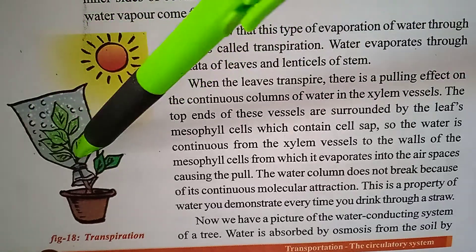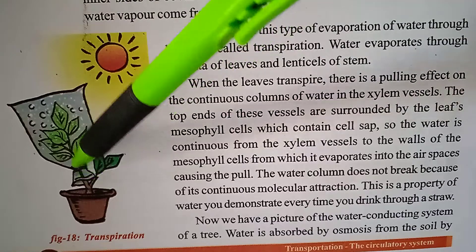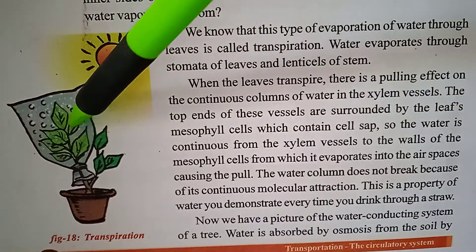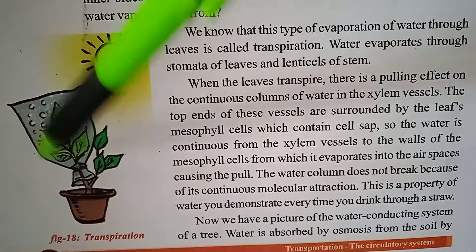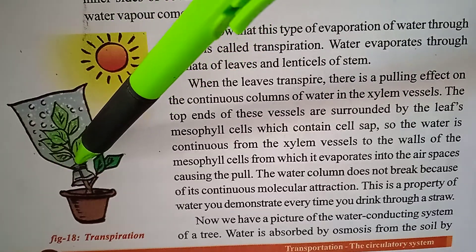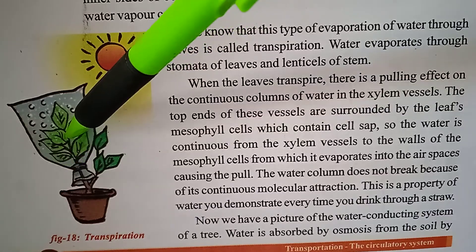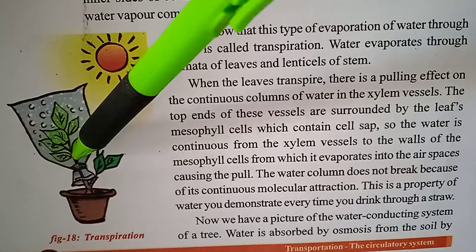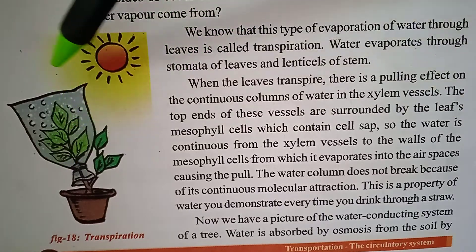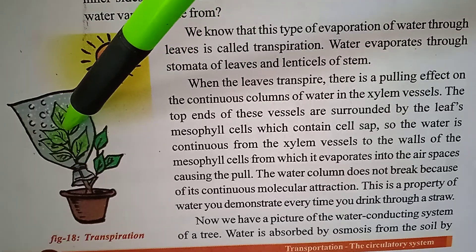So, here these are leaves and this is the branch. And leaves are having stomata, and these branches also have lenticels. And they are openings. And through these openings, evaporation of water takes place, and loss of water takes place.